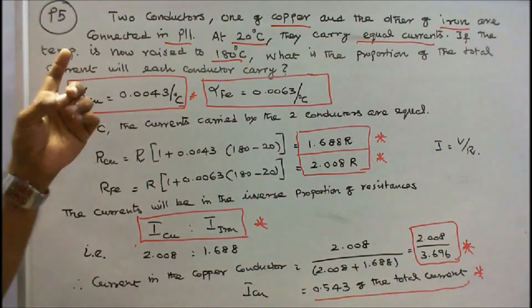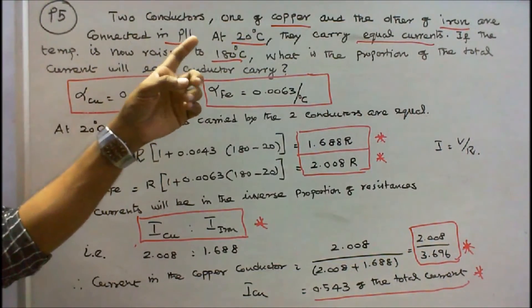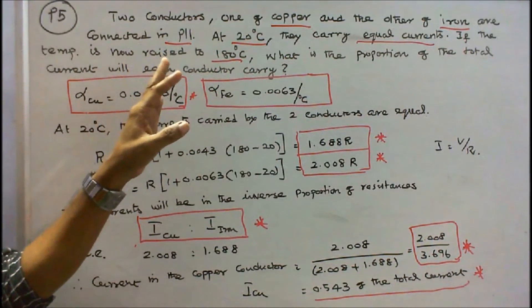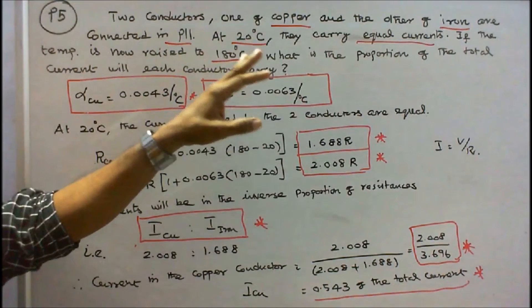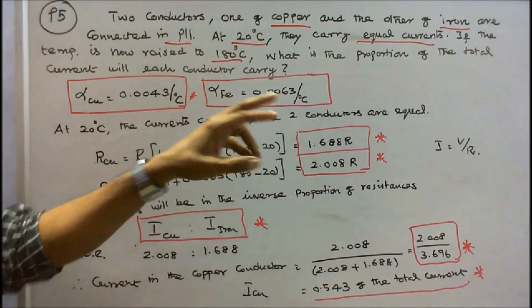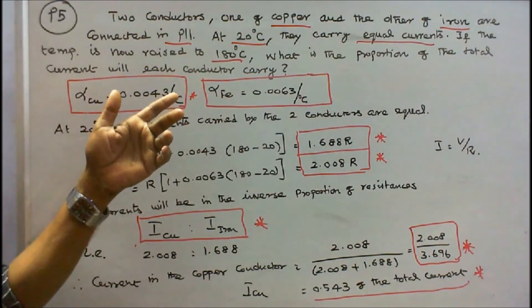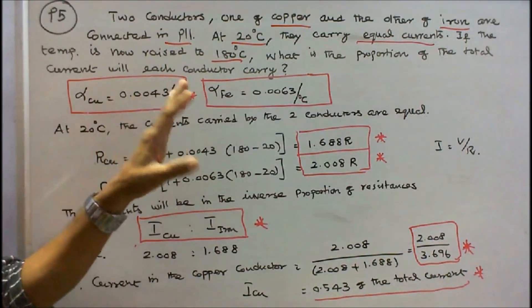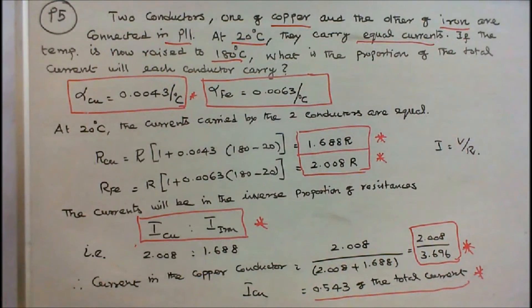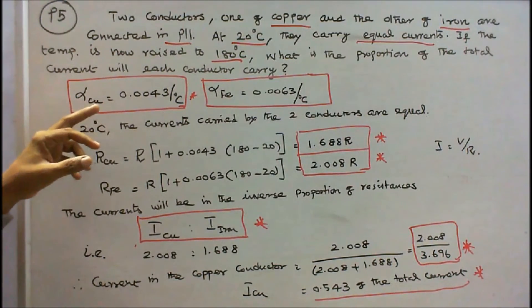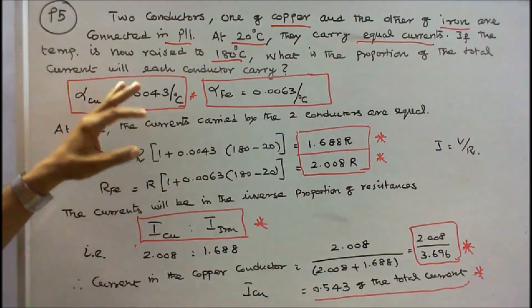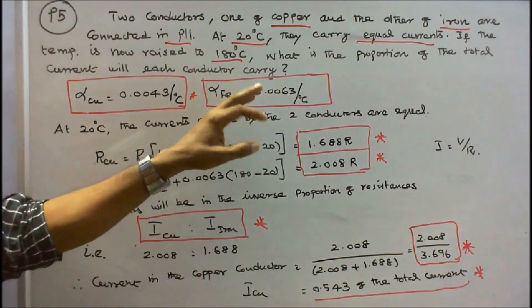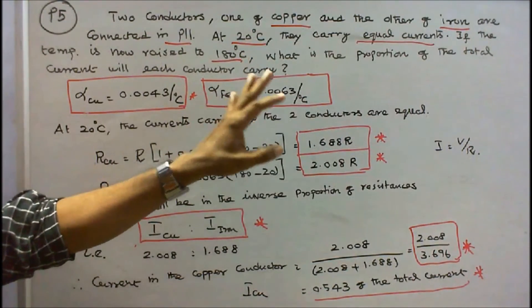Problem number 5. Two conductors — one copper and the other iron — are connected in parallel. At 20 degree centigrade they carry equal currents. If the temperature now rises to 180 degree centigrade, what proportion of the total current will each conductor carry? The temperature coefficient of copper is 0.0043 per degree centigrade at 20 degree centigrade; iron is 0.0063 per degree centigrade at 20 degree centigrade.